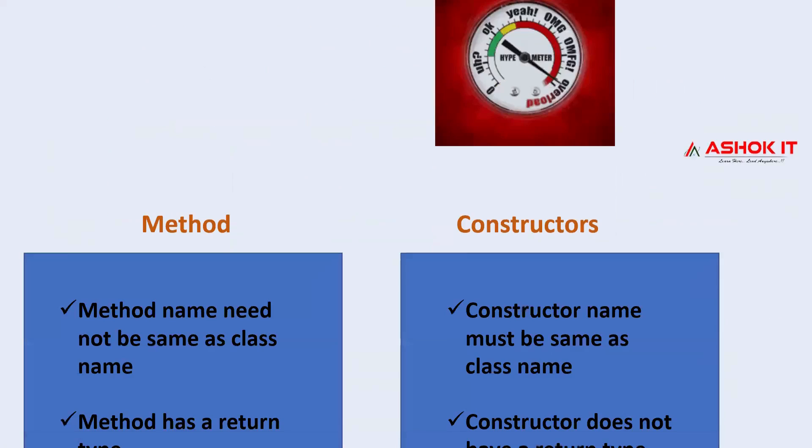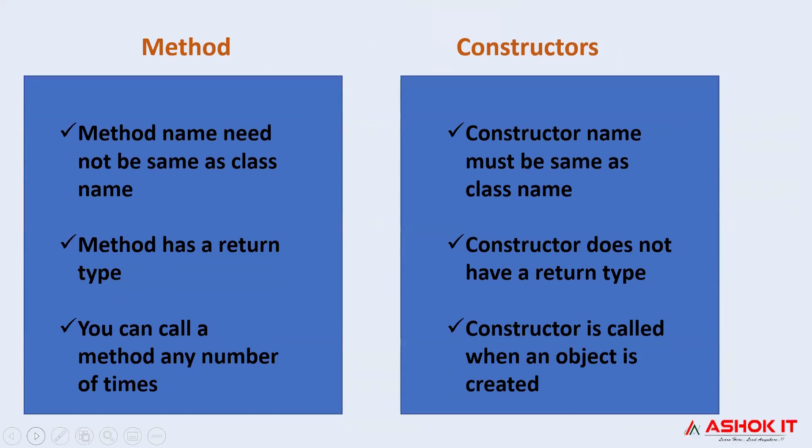Now let's move ahead to the next concept, that is the difference between the constructor and a method. The first difference is the name. Method name need not be same as the class name, but when it comes to constructors, the method name should be same as the class name. Followed by the second difference, method always has a return type, whereas constructor does not have any return type.